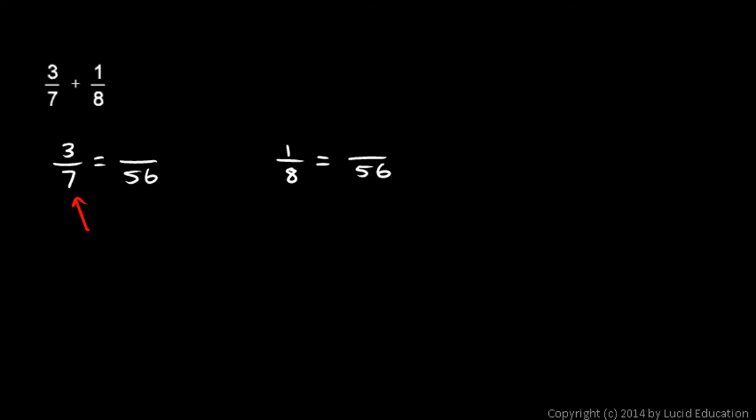Let's rewrite 3 7ths with a denominator of 56. 7 times what is 56? 7 times 8, so we multiply the 3 times 8, and 3 times 8 is 24. And here, 8 times what is 56? 8 times 7, so we also multiply the 1 by 7 and we get a 7. So, 3 7ths is equal to 24 56ths, and 1 8th is equal to 7 56ths.